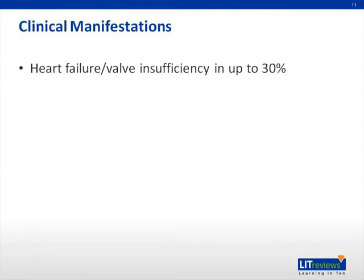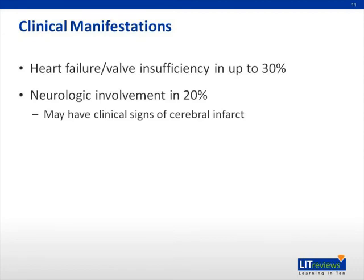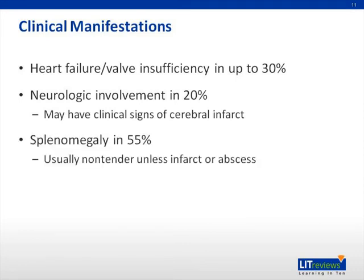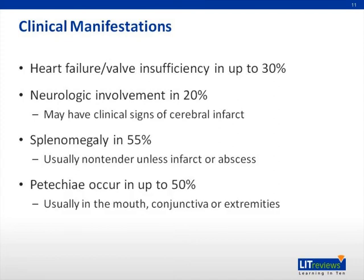Patients can develop heart failure due to acute onset of valve insufficiency in up to 30% of cases. They will present with dyspnea on exertion, shortness of breath, lower extremity swelling, tachypnea, and failure to thrive. Neurologic involvement can occur in 20% of cases, and patients may show clinical signs of cerebral infarcts. Splenomegaly is a common finding in 50% of cases, and the spleen is usually non-tender unless it has an infarct or abscess. Petechiae is present in up to 50% of cases, commonly in the mouth, conjunctiva, or extremities.